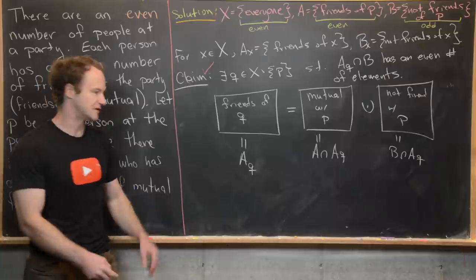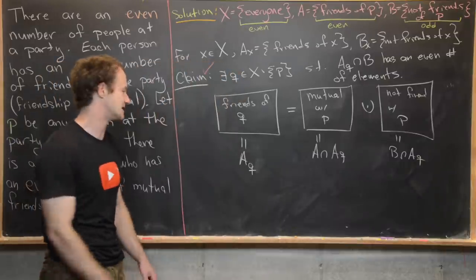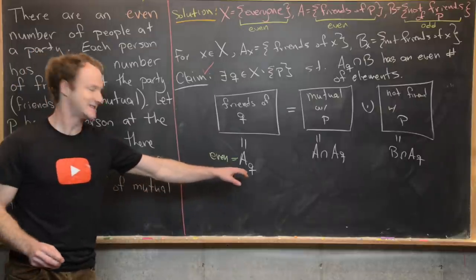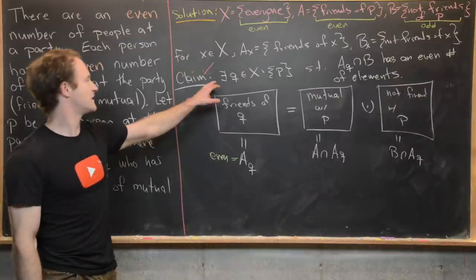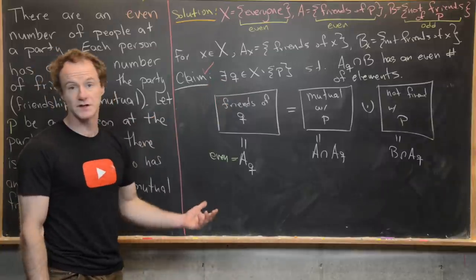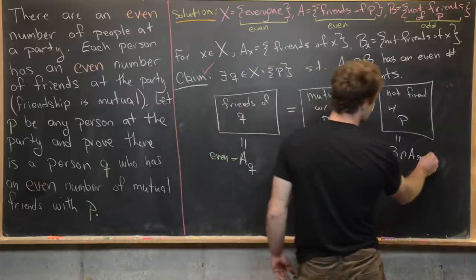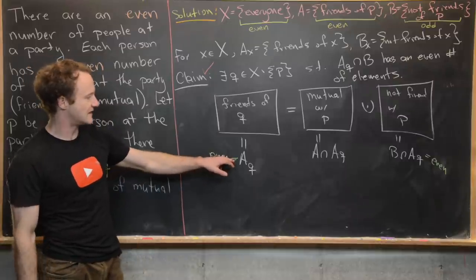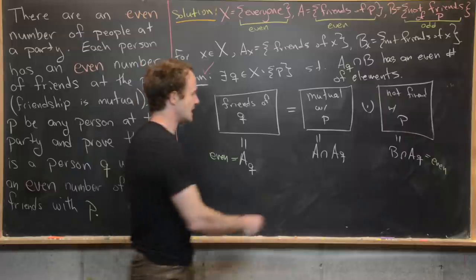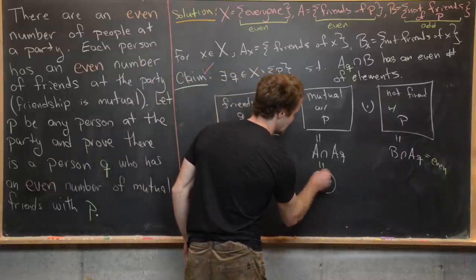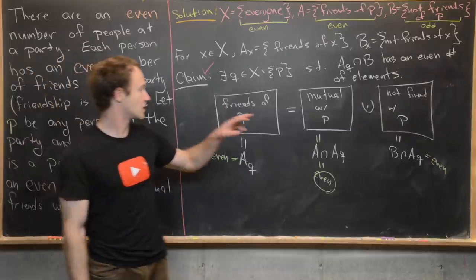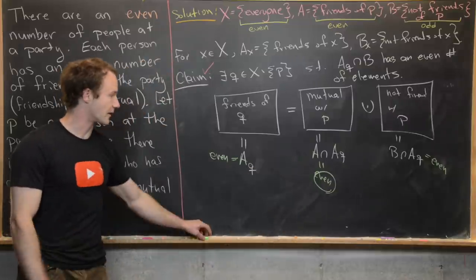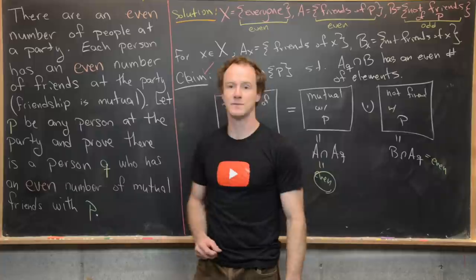By assumption, everyone has an even number of friends, so |A_Q| is even. By our claim, |B ∩ A_Q| is even. Since |A_Q| = |A ∩ A_Q| + |B ∩ A_Q| and both |A_Q| and |B ∩ A_Q| are even, it follows that |A ∩ A_Q| is also even. In other words, the number of mutual friends between Q and P is even — which is exactly what we wanted to show.